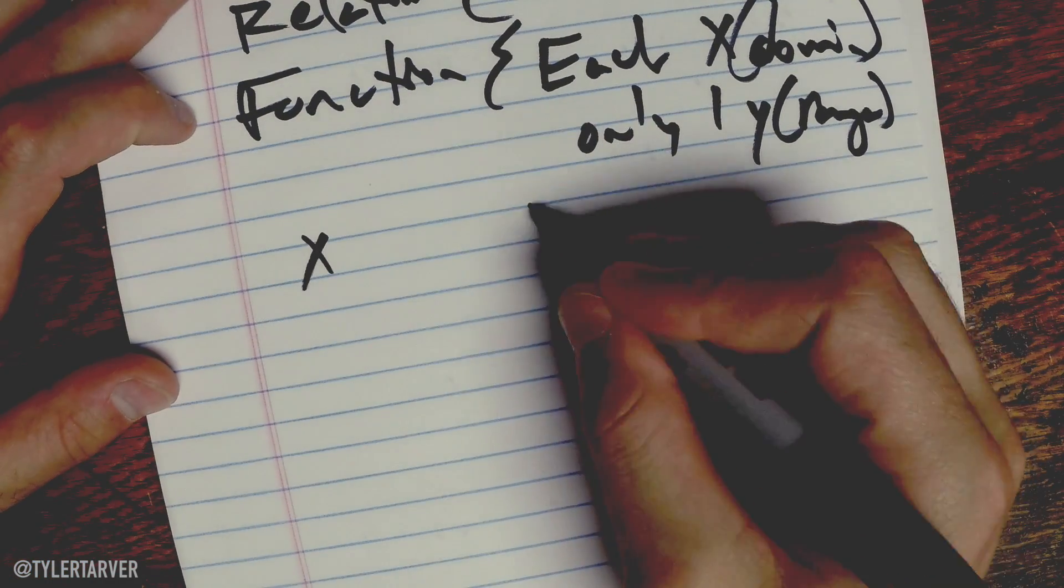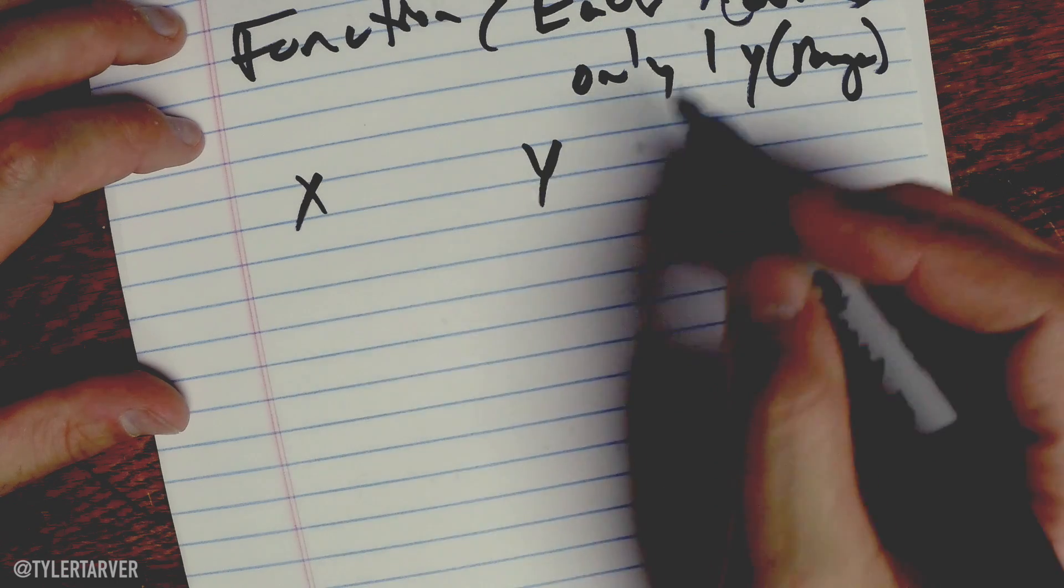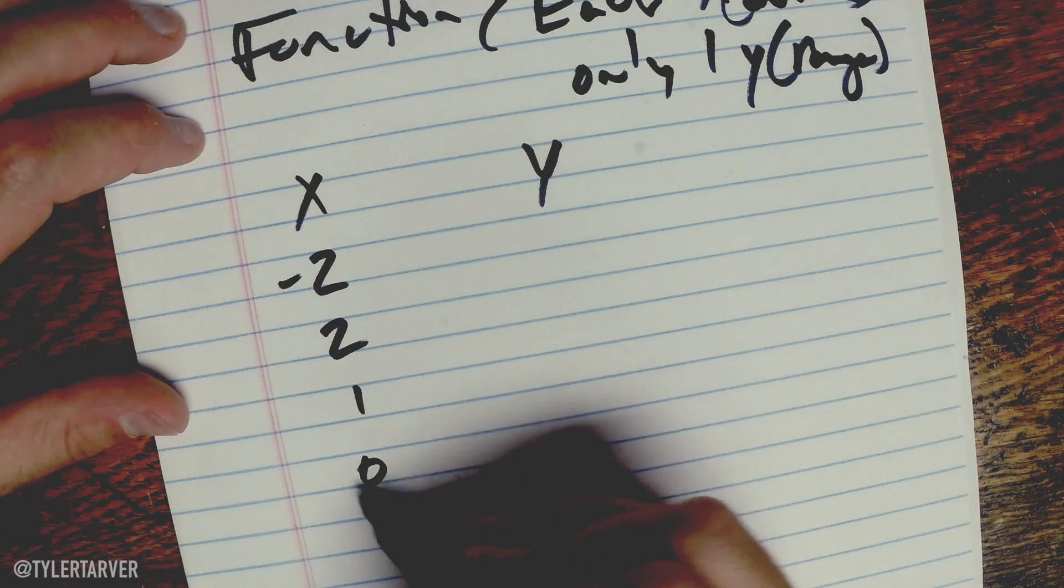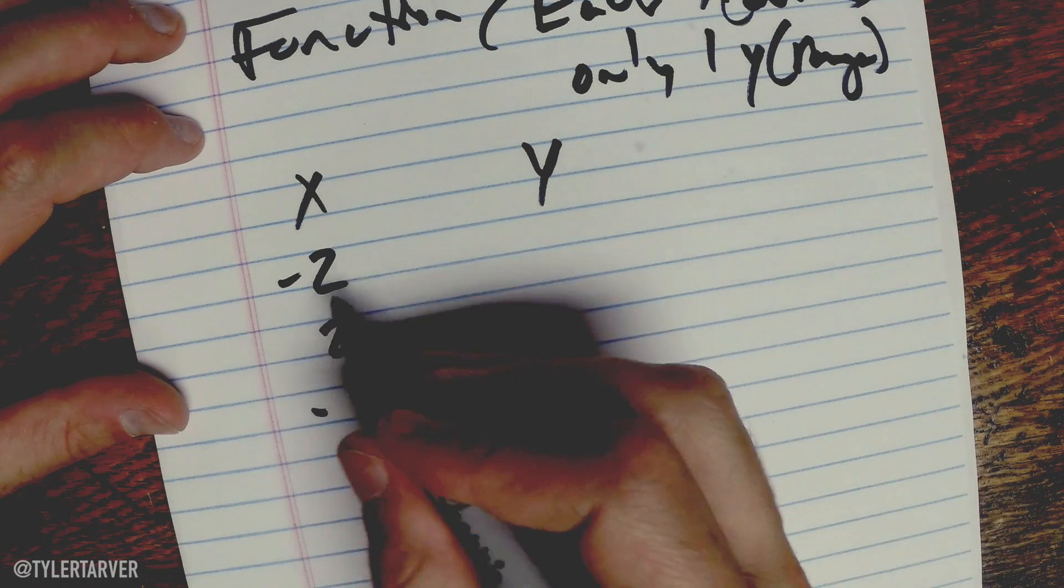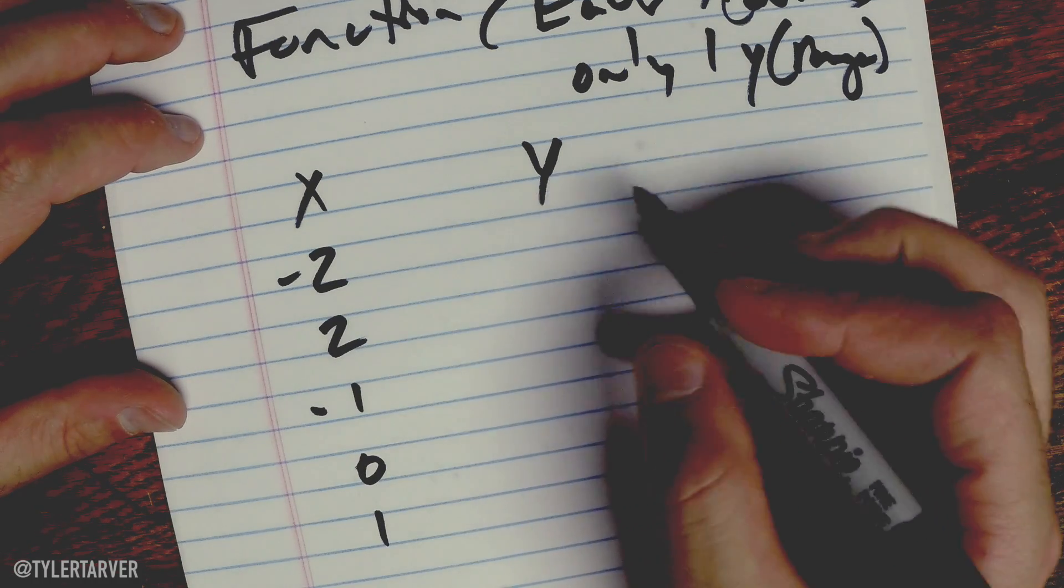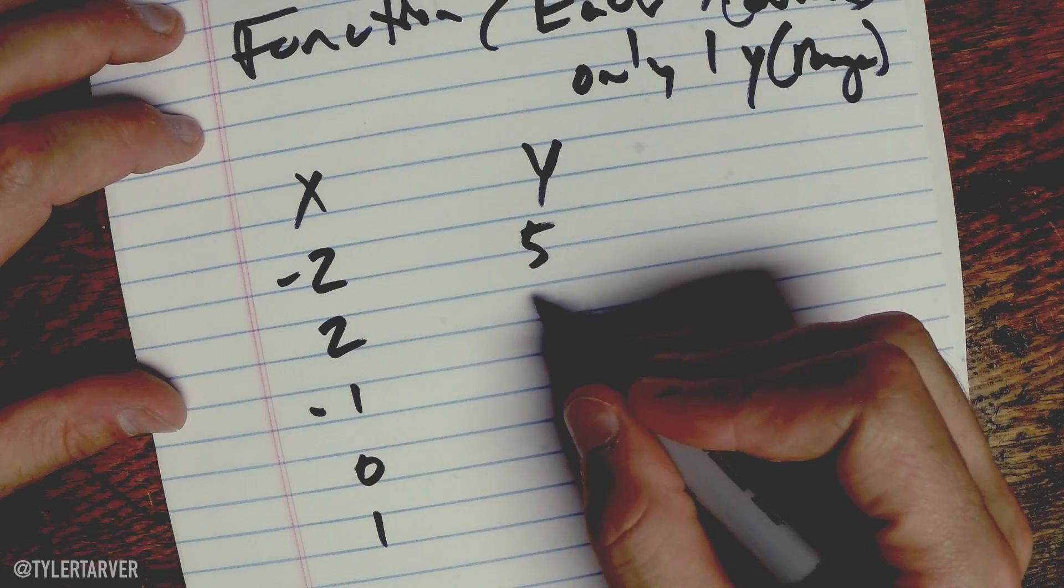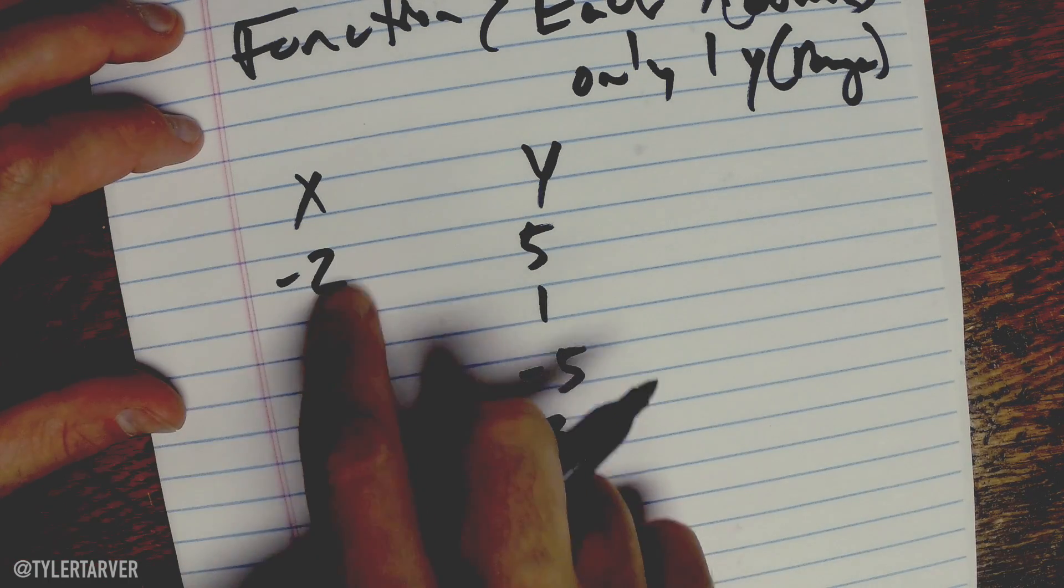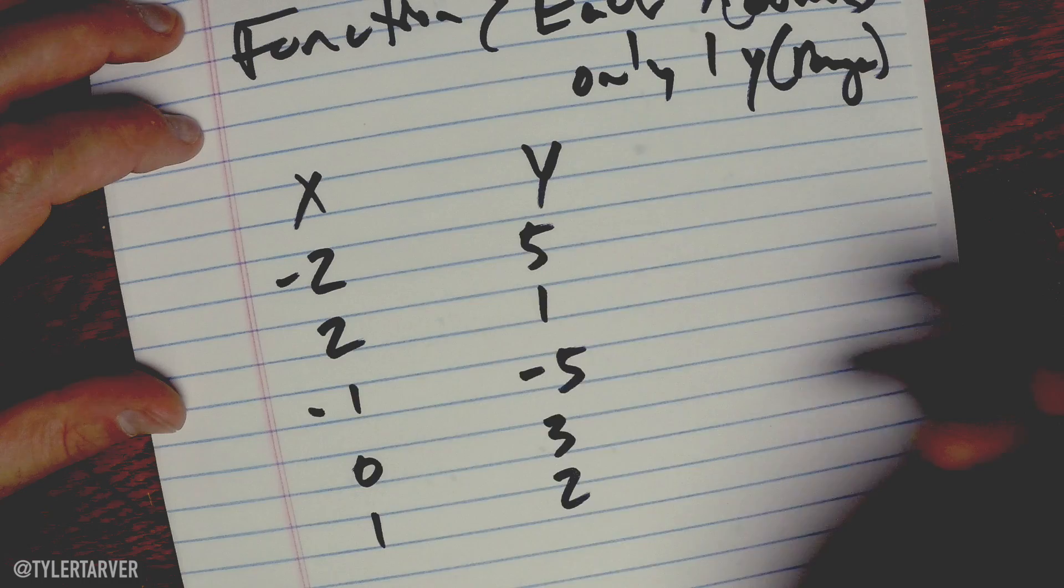Okay, so for instance, if you've got your x's and you've got your y's, you've got each x, so it'd be like negative two, two, one, zero, one, negative one. Okay. And then you've got your y's. So like five, one, negative five, three, and two.